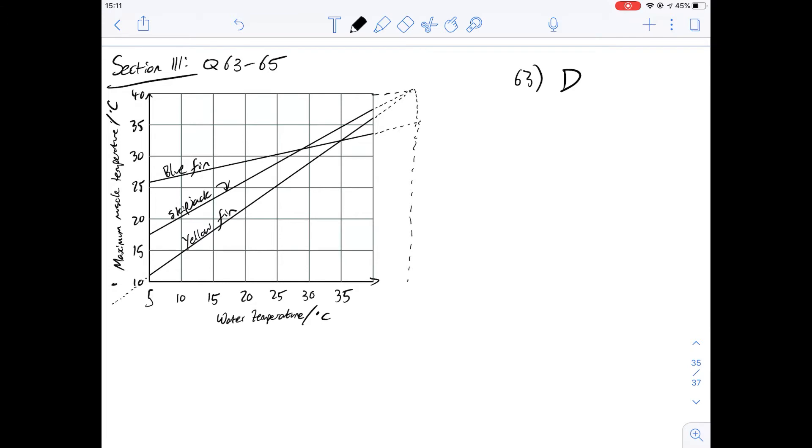If you look at 64, then it says which of the following best describes the relationship between maximum muscle temperature and water temperature for the skipjack. So the skipjack is this middle line here and we can see that as the water temperature increases so too does the maximum muscle temperature. But the gradient of that line will tell us whether or not the maximum muscle temperature is increasing faster than the water temperature or if it's increasing slower than the water temperature.